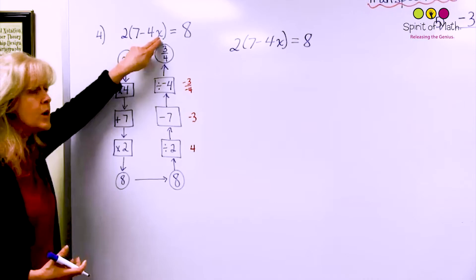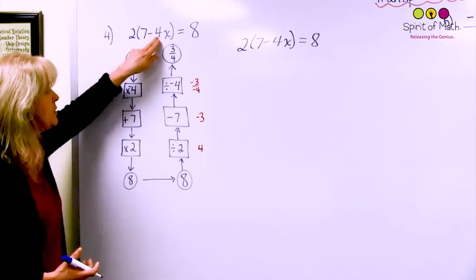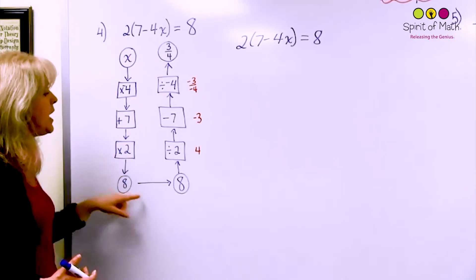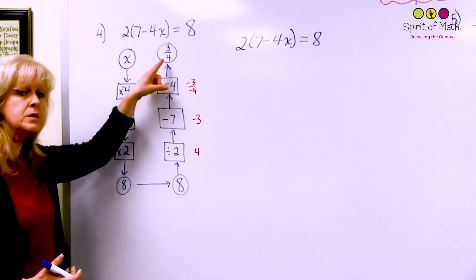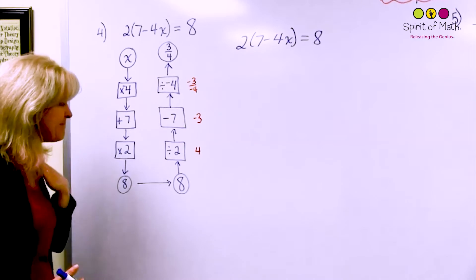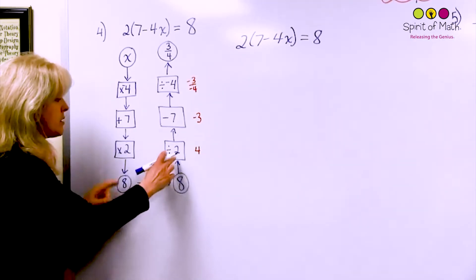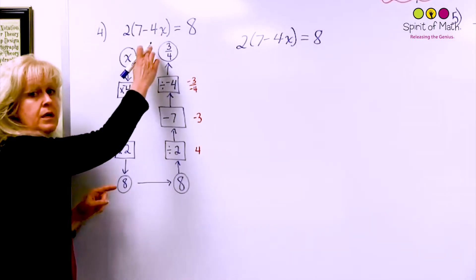If you knew what this x was then you would multiply by negative 4 which is the first one. Then you could add 7 and then you can multiply by 2. And then it said let's do that backwards.